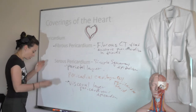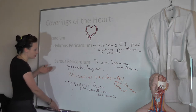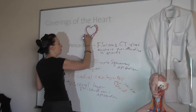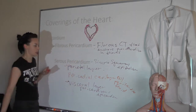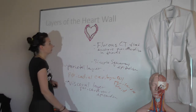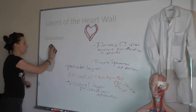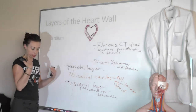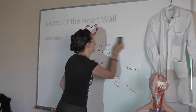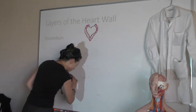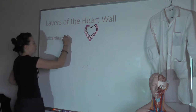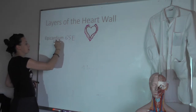The fibrous pericardium is fibrous connective tissue attached to the parietal pericardium that anchors it to the thorax and surrounding structures. Now, the layers of the heart wall: the epicardium is the visceral layer of the serous pericardium — simple squamous epithelial tissue on the outside of the heart. The thickest layer of the heart wall is the myocardium, which is where we find our cardiac muscle.